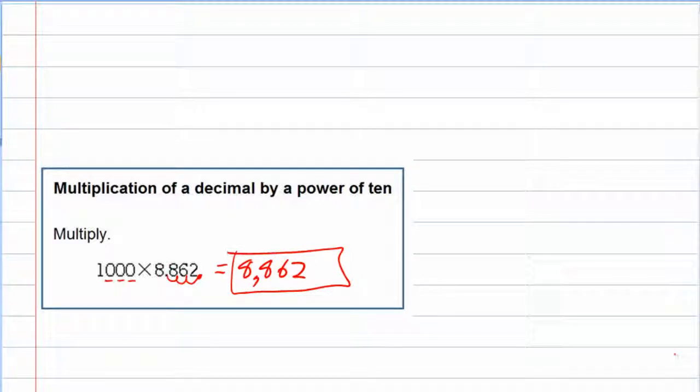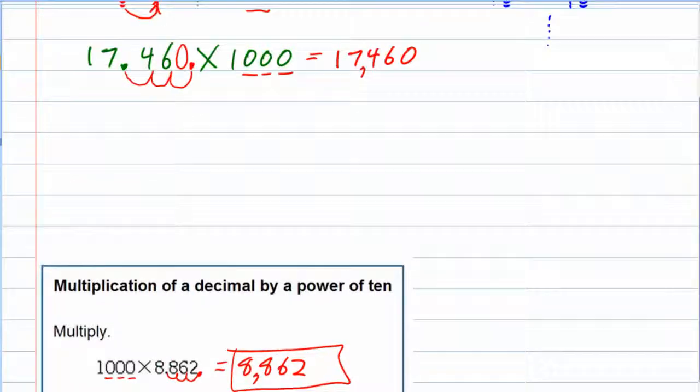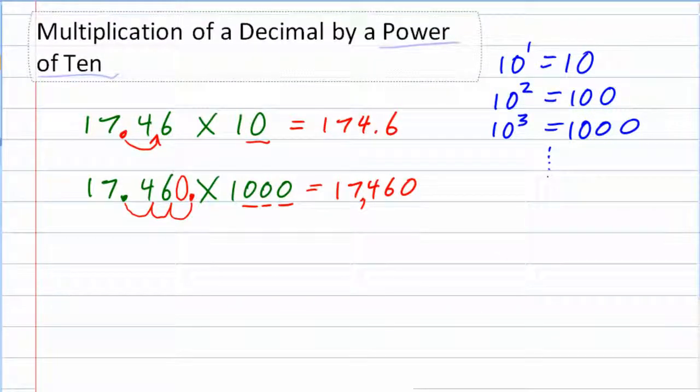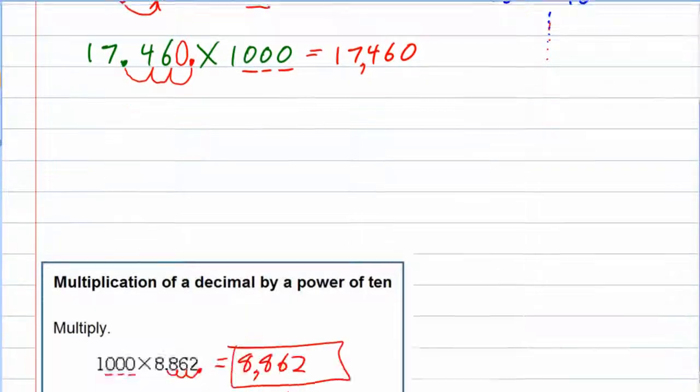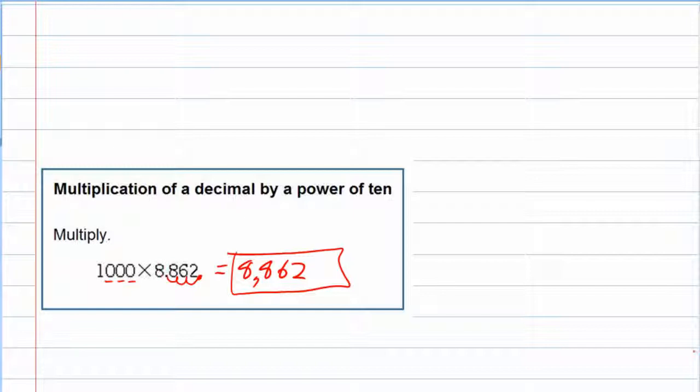Whenever this rule comes up, where you're multiplying by 10, 100, 1,000, 10,000, by a power of 10, and remember, this goes on and on. When this comes up, hopefully this shortcut will make life a little nicer for you.